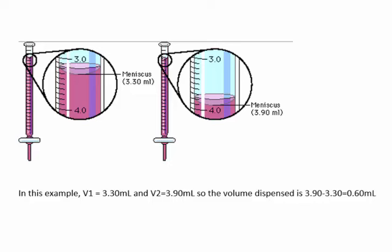Here's an example where a volume was dispensed from the burette. The initial reading, or V1, is 3.30 milliliters. V2 is 3.9 milliliters.